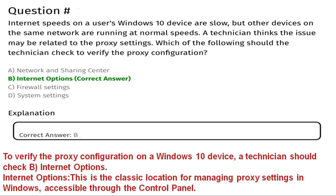The correct answer for this question is Option B, Internet Options. To verify the proxy configuration on a Windows 10 device, a technician should check Internet Options because it is the classic location for managing proxy settings in Windows, accessible through the Control Panel.